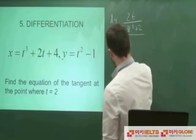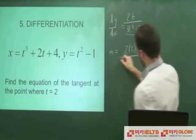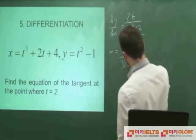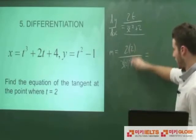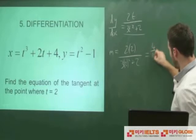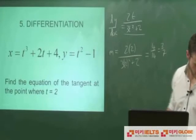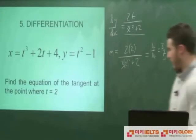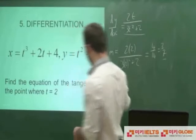So the gradient is going to be equal to 2 times 2 divided by 3 times 2 squared plus 2. So we've got 4 over 12 plus 2, or 14. 4 over 14 is equal to 2 sevenths. That means that our gradient of our tangent is 2 sevenths.